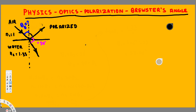Let's try this problem. Here we have a light ray traveling from air to water. When it travels from air to water there's a reflection, and the angle between the incident ray and the reflection is 90 degrees. When the reflected angle is polarized like this, the incident angle is called Brewster's angle.